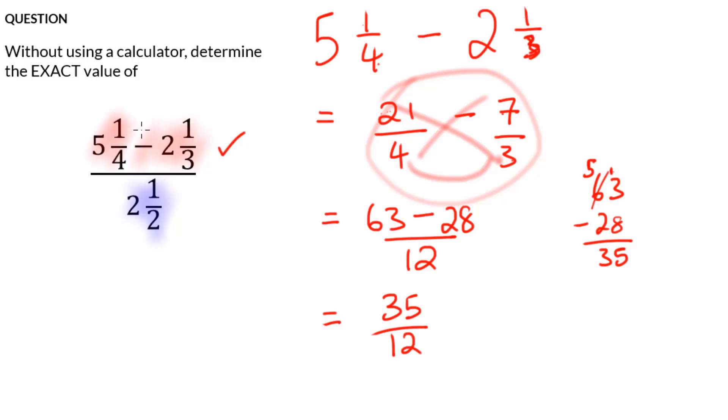So we have our problem in the numerator. Now we need to take this 35 over 12. I'm not going to change it to a mixed number yet because I'm going to have to divide it by two and a half.